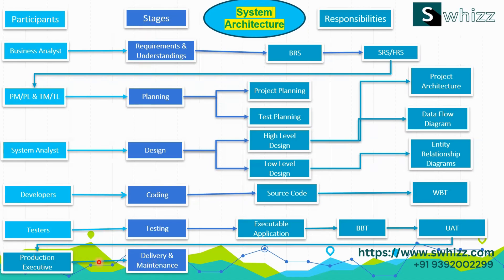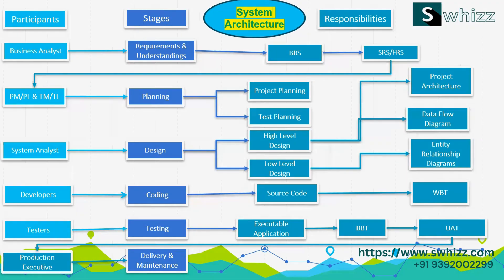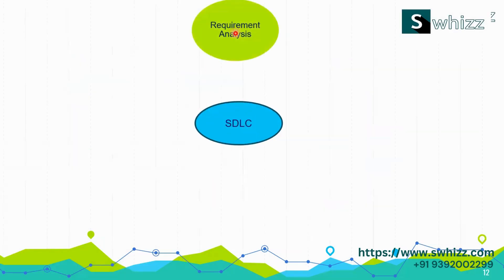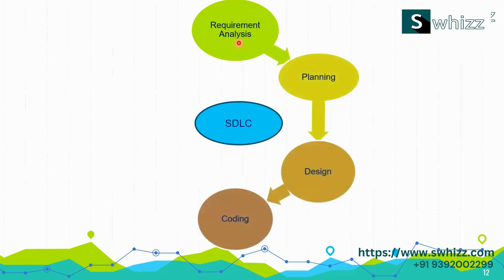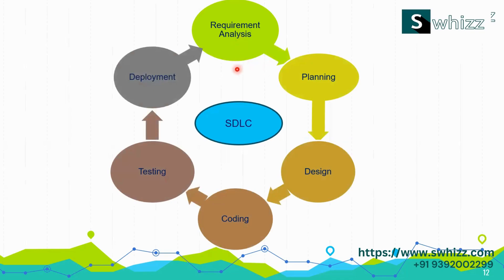Looking at the system architecture diagram, there is a heading showing stages — these stages can also be called phases. These are the Software Development Life Cycle (SDLC) phases: requirements analysis phase, planning phase, design phase, coding phase, testing phase, and deployment and maintenance. This cycle continues, which is why it is called the Software Development Life Cycle.